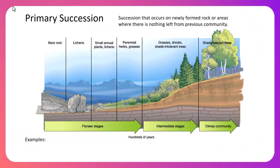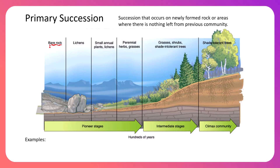Let's get into it. We've got two types of succession. The first is called primary succession, and primary succession occurs in an area where there is bare rock left over — absolutely nothing left from whatever that previous community would have been. Both types of succession follow a very similar path; they just have a different starting point.